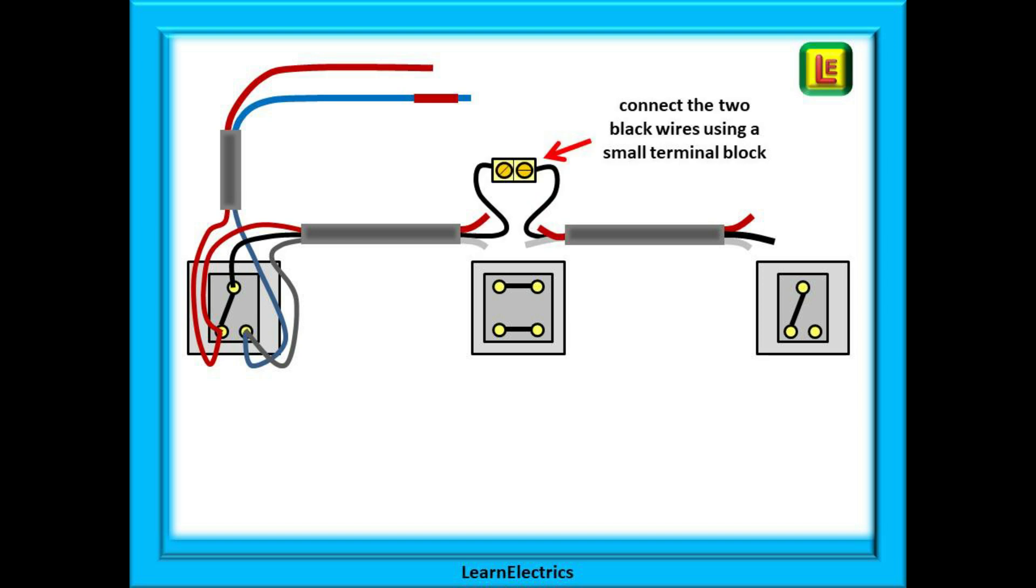Using a small terminal block, connect the two black wires at the middle switch. Use the smallest convenient sized terminal block as this has to fit inside the switch box on the wall. Now connect up the two browns to L1 and L3 and the two grey cables to L2 and L4.